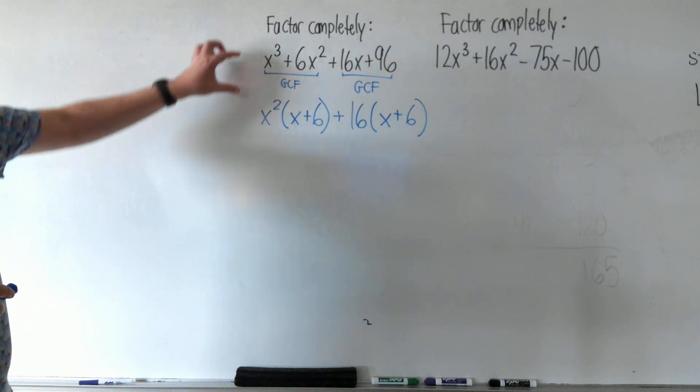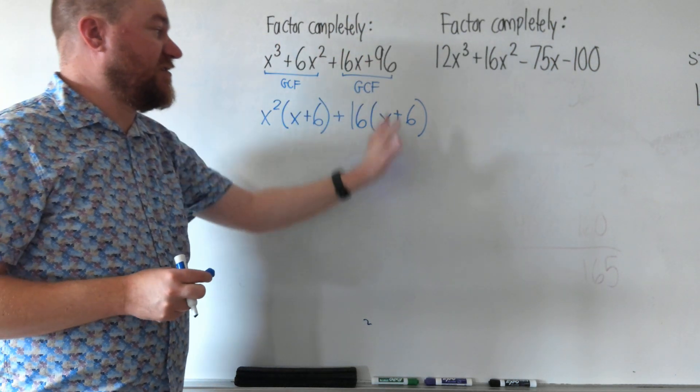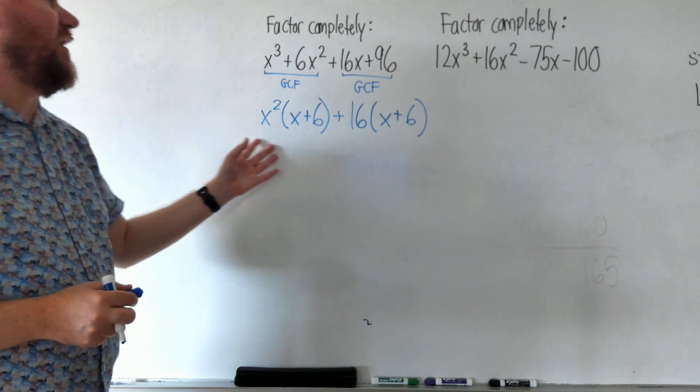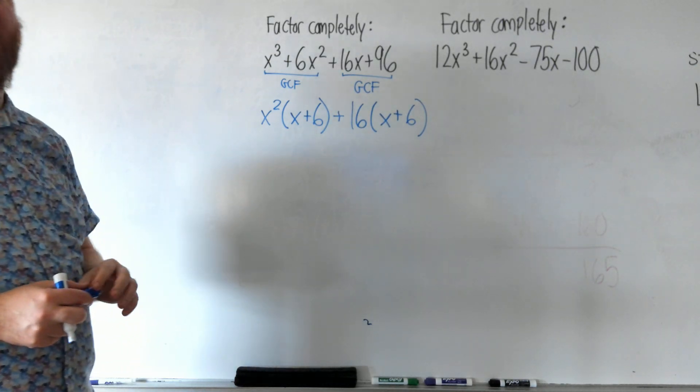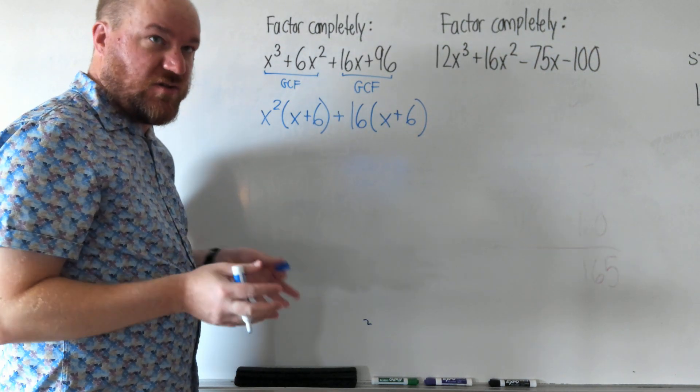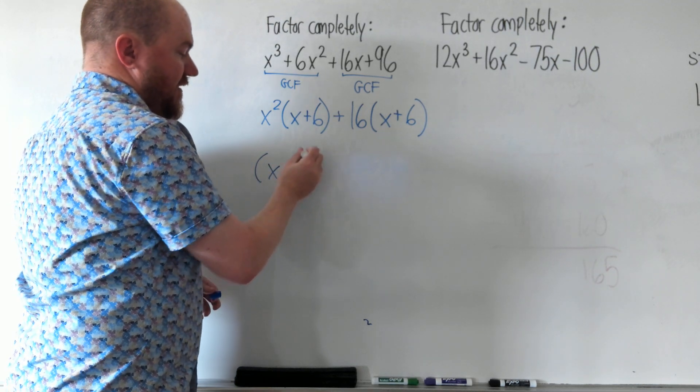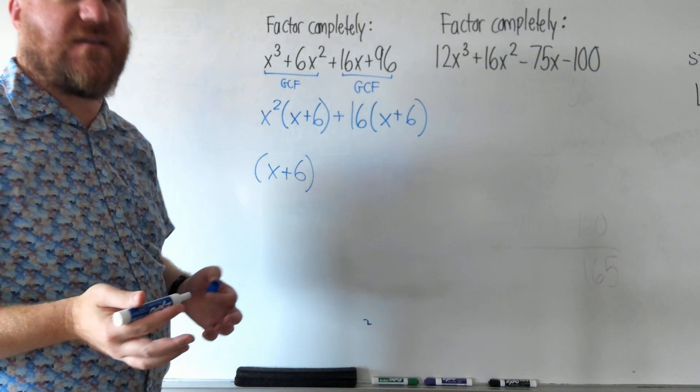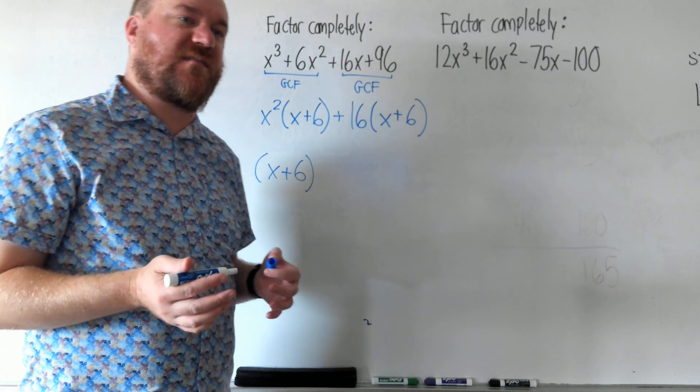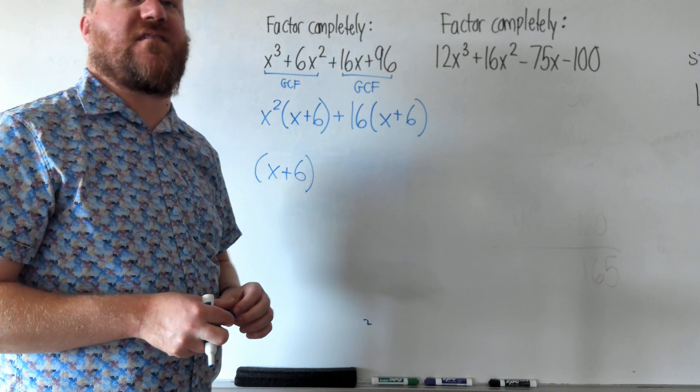Your first step is to find the GCF of the first two terms, and then the GCF of the second two terms. Now that we have this statement here, the last step of factoring by grouping, the stuff in the parentheses should be the same. And if they are, that's one of your factors. If they're not the same, then you need to go back and try again. Factoring by grouping should always work out that the parentheses are the same.